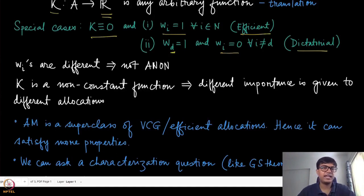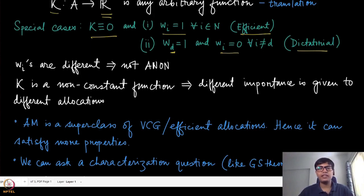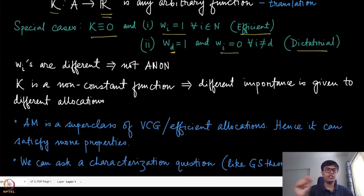We can observe that because the wi's can now be different for different agents, this mechanism is not anonymous anymore. In the efficient allocation it was anonymous because permuting agents' names and giving them permuted valuations does not change the sum, so the outcome stays the same. But with different weights wi, permuting agents assigns different weights to different valuations, which can change the allocation — and therefore the mechanism might not be anonymous anymore.